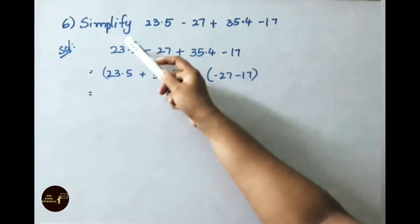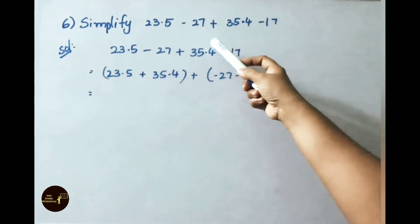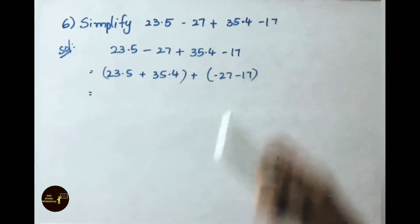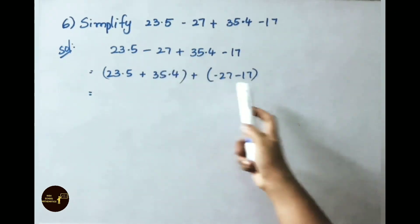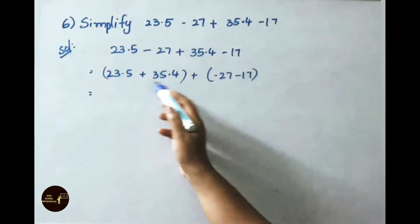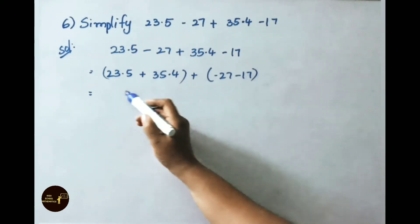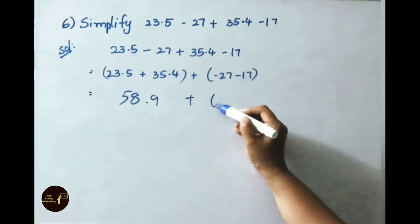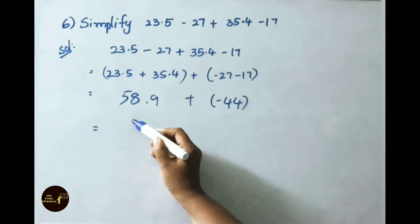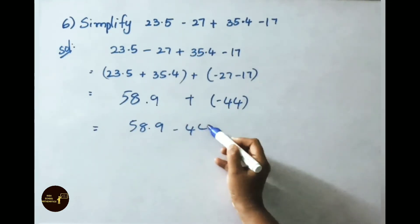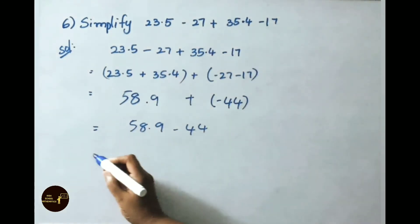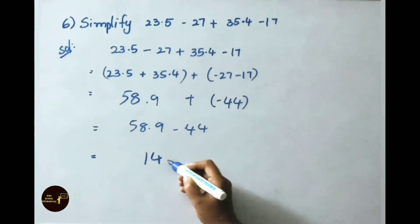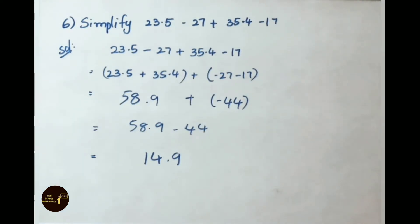See now question number 6. Simplify: 23.5 minus 27 plus 35.4 minus 17. Let us see the solution now. We separate positive and negative numbers. Adding the positives: 23.5 plus 35.4 is 58.9. Adding the negatives: 27 plus 17 is 44. That gives us 58.9 minus 44, which equals 14.9.